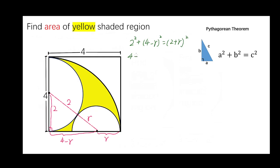That is, 4 plus 16 minus 8R plus R squared equals to 4 plus 4R plus R squared. So we got 12R equals to 16. R equals to 4 over 3.